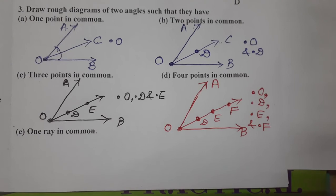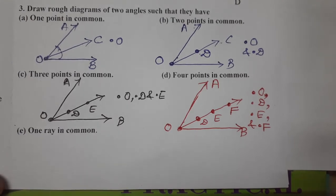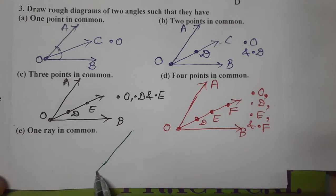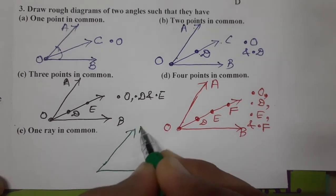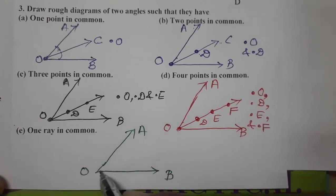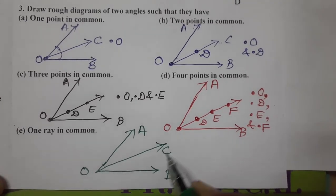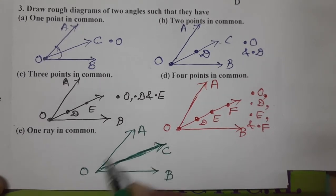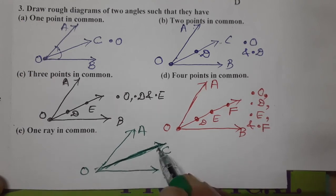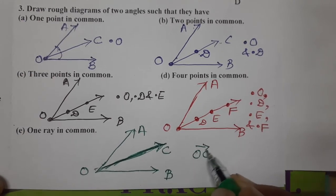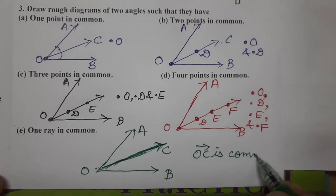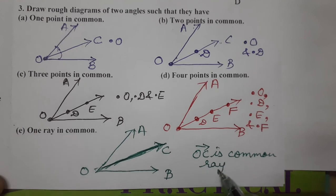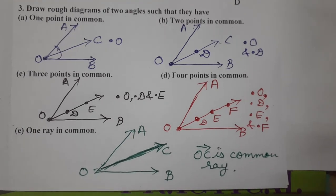The last part is one ray in common. Draw ray OB, and then ray OC — this ray OC is common to both angles. In angle AOC, ray OC is present, and in angle BOC, ray OC is also present. So ray OC is common. This completes exercise 4.3 — practice it, students. Thank you so much for watching the video.